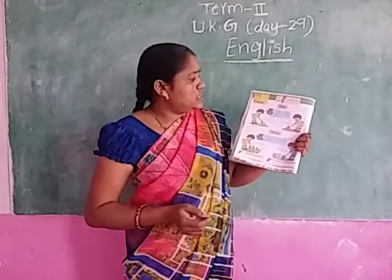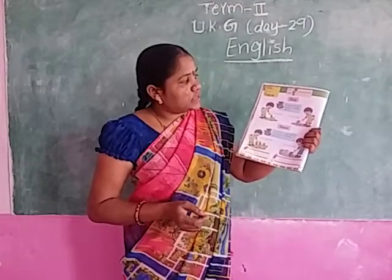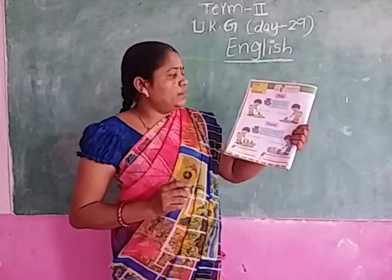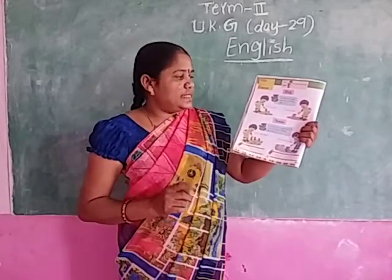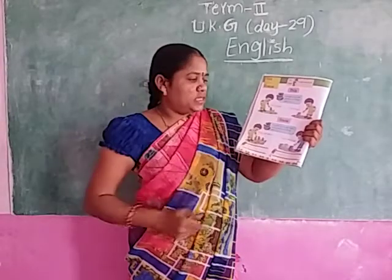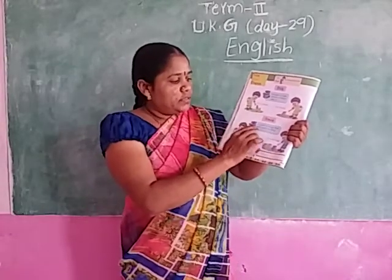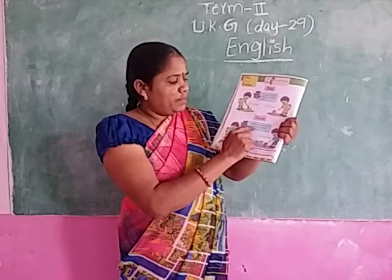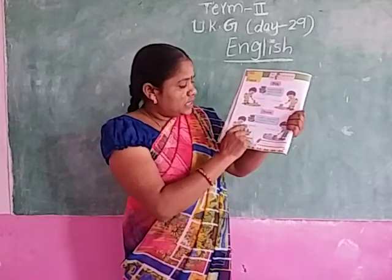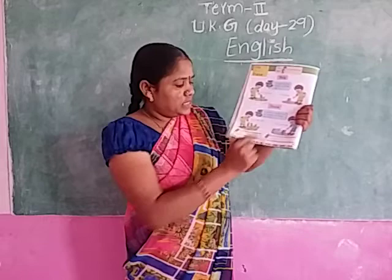This and these. To point to one person or thing, use 'this.' This is a hand. This is a jet. To point to more than one person or thing, use 'these.' These are hands. These are jets.